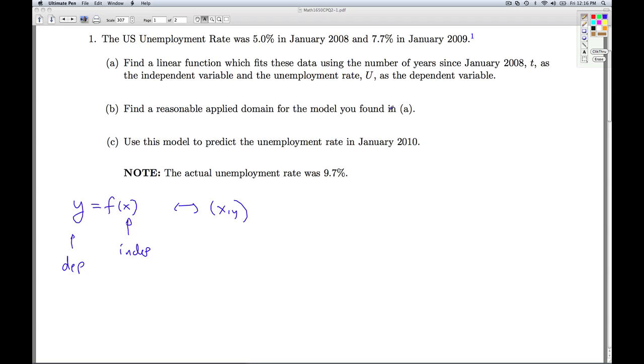So in this example, we're asked to use t, the number of years since January 2008, as the independent variable, and the unemployment rate u as the dependent variable. So we're looking at u equals some function of t, which means we're going to plot points t comma u. So let's go ahead and do that.